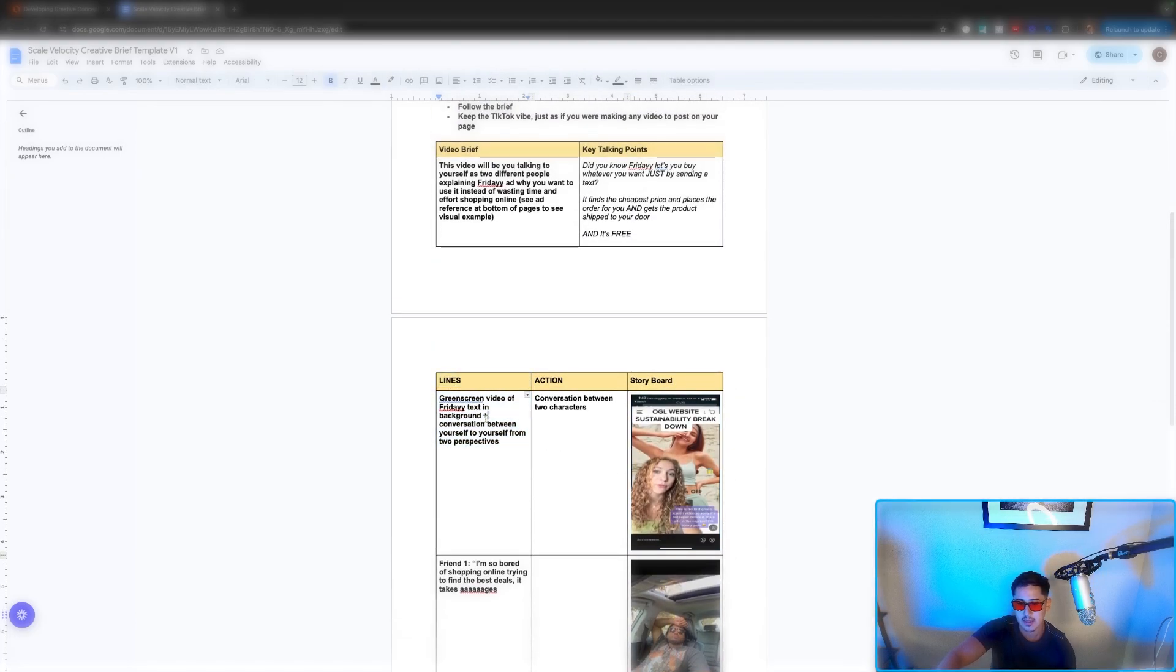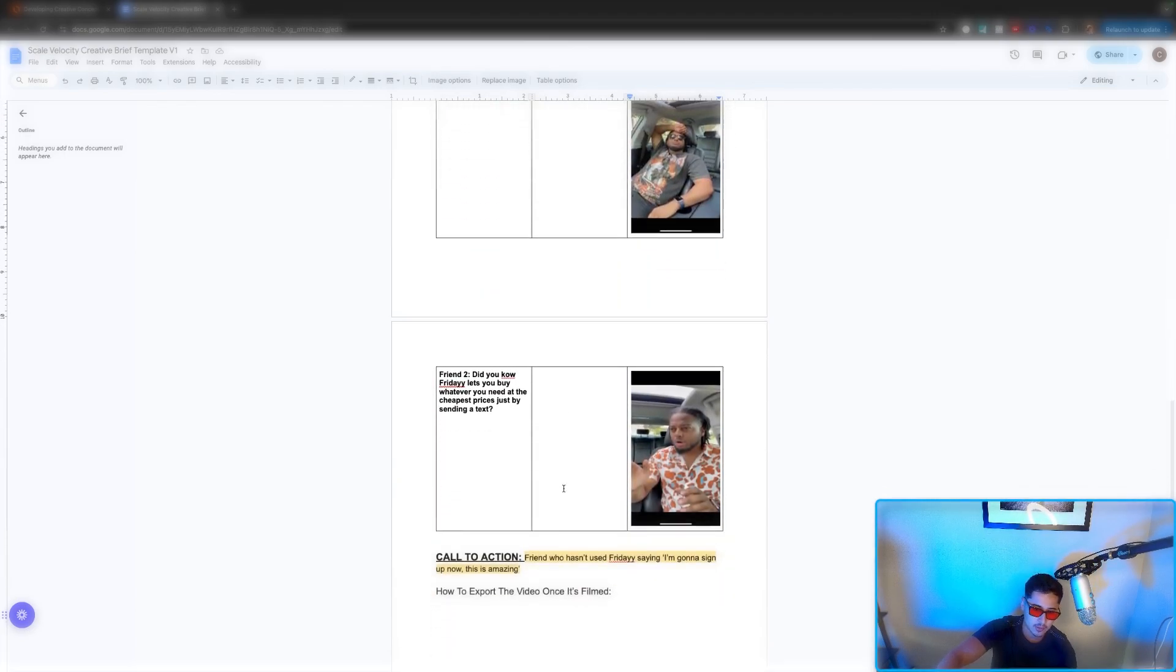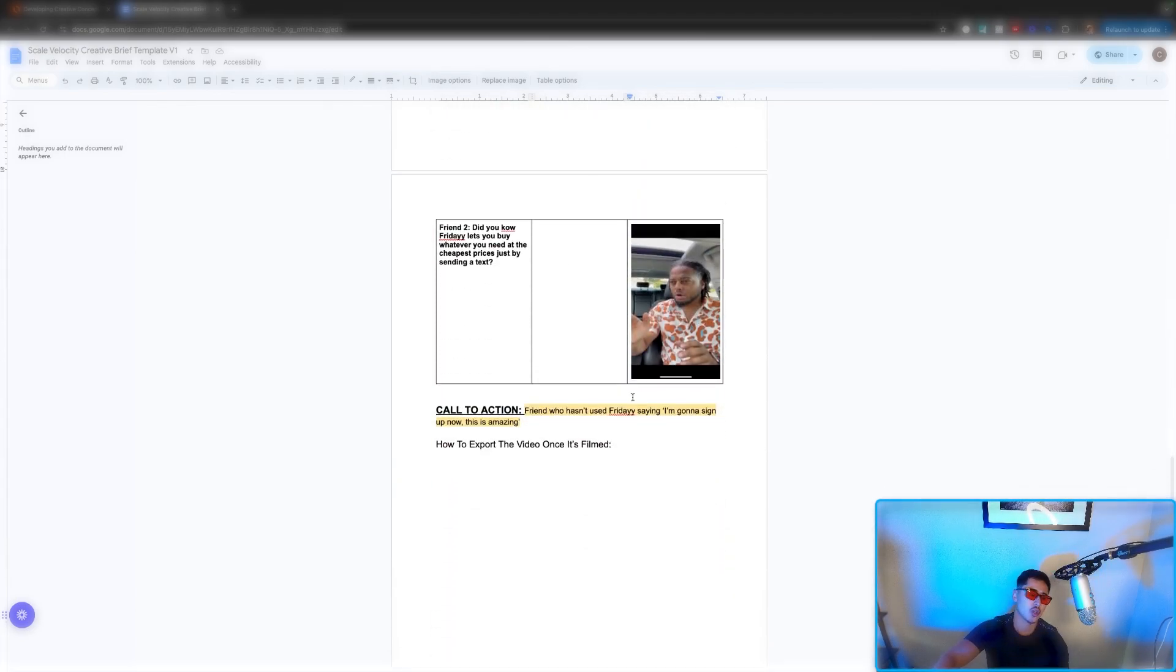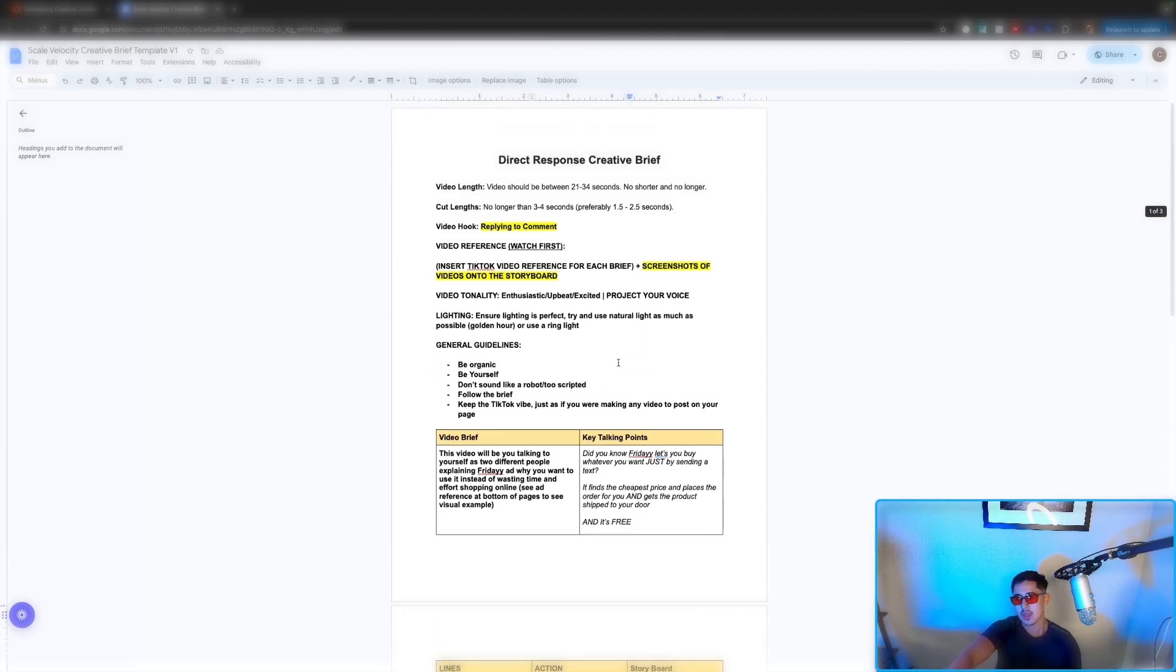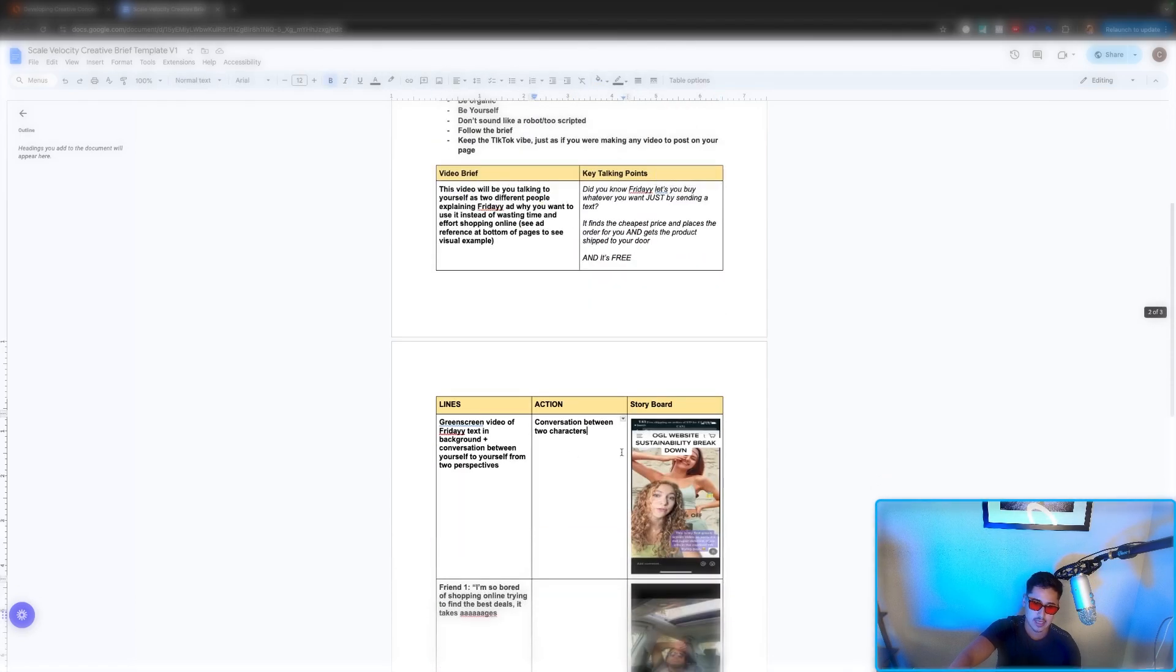So when the creator reads this, they read the line, they see the action, they have the storyboard visual, they have a video that kind of goes along with that. So you're eliminating the amount of risk on brand new creators, because you have everything mapped out to a T. You have your video brief, talking points, lines, action, storyboard.